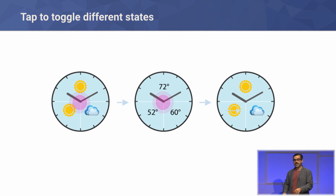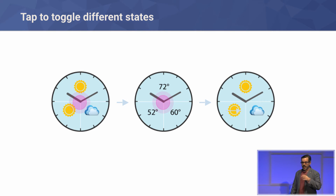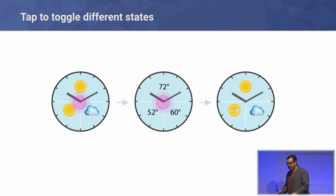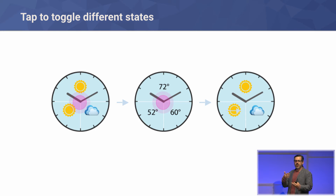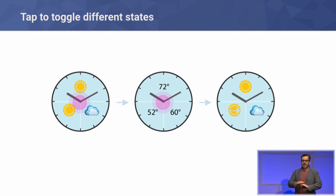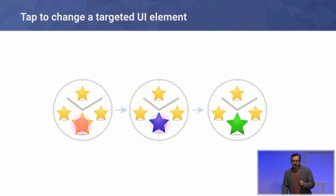You can also use the whole watch face to change its entire state. For example, in a weather watch face with weather icons, once you tap, you replace the background with the temperature and tap back to return to the previous state. You're changing the whole state, not a specific area of the UI.